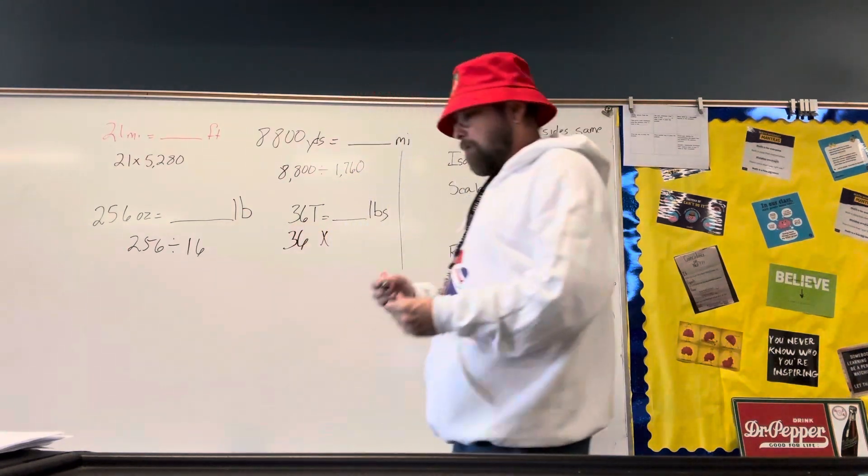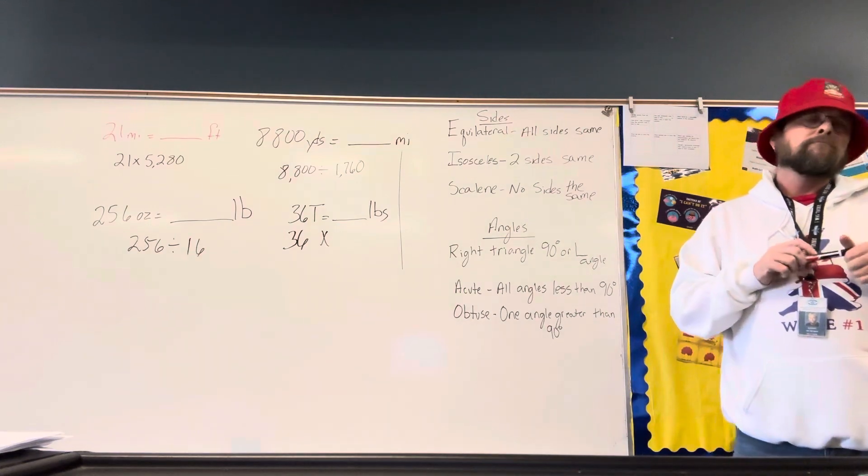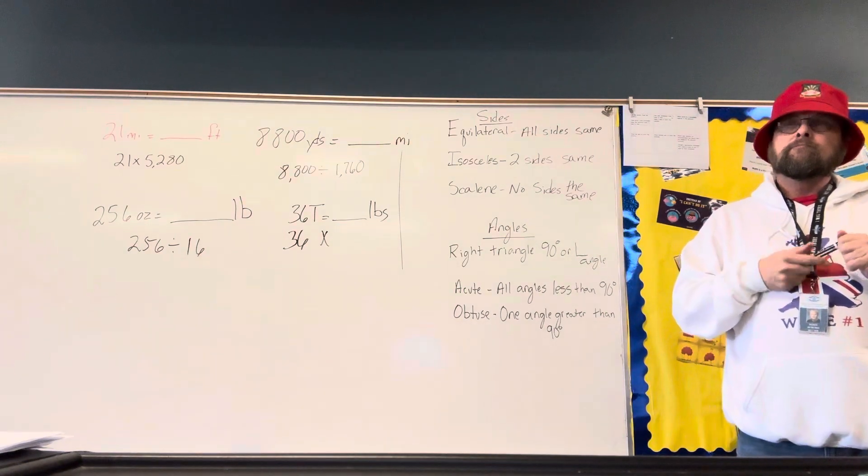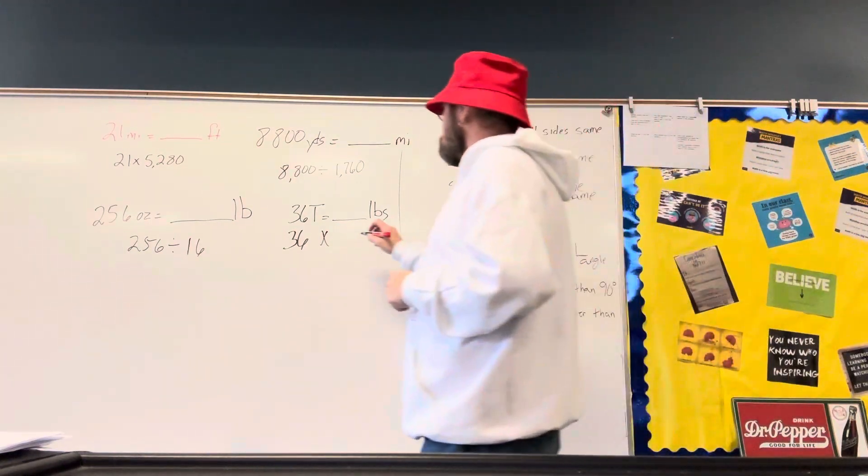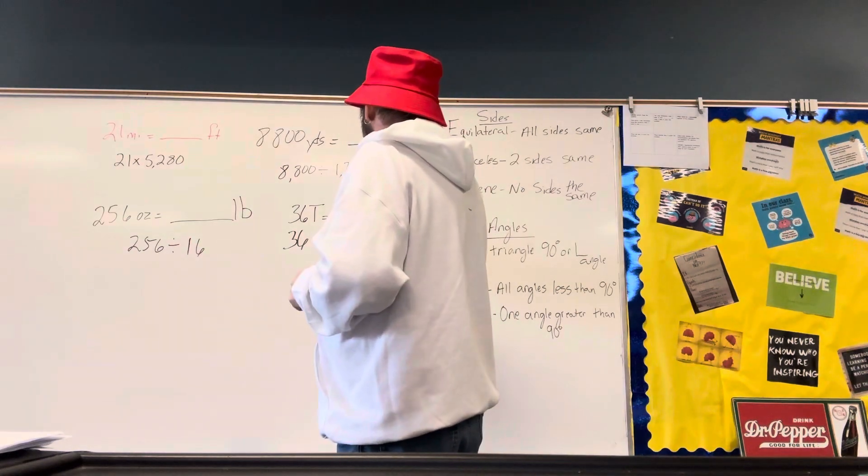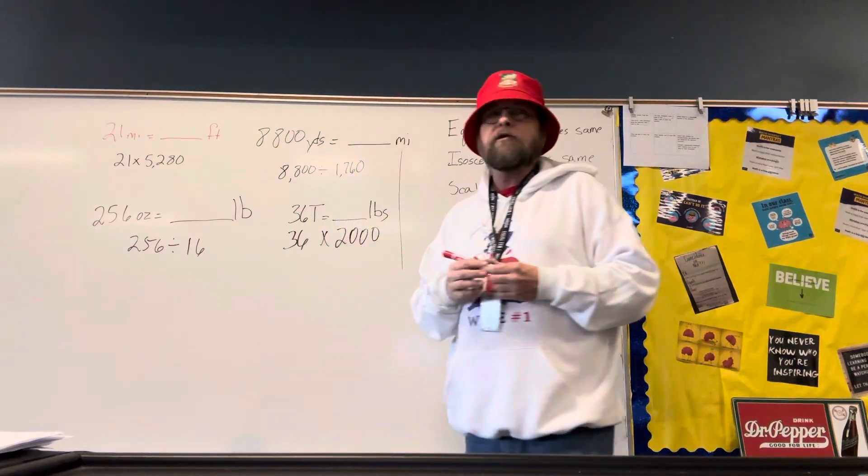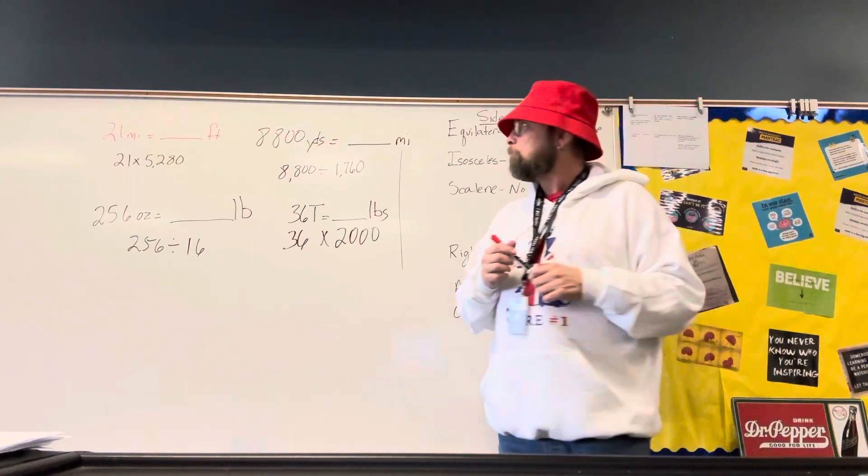And how many pounds are in one ton? 2,000. 2,000. So, to get this, we would multiply 36 times 2,000. Yes, sir. The third one is 16.